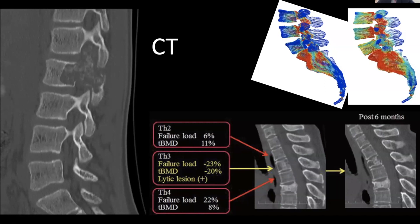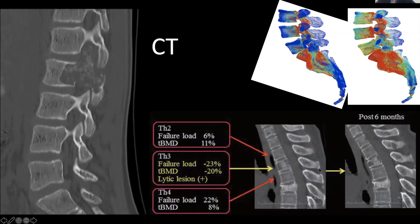We can also take data from CT and use it for some very useful applications. We can do what's known as finite element modeling, which allows us to compare population data with an individual's data and look at things like stress-strain relationships across end plates. Various software algorithms are becoming more and more available to assist in deciding various characteristics of pathology.